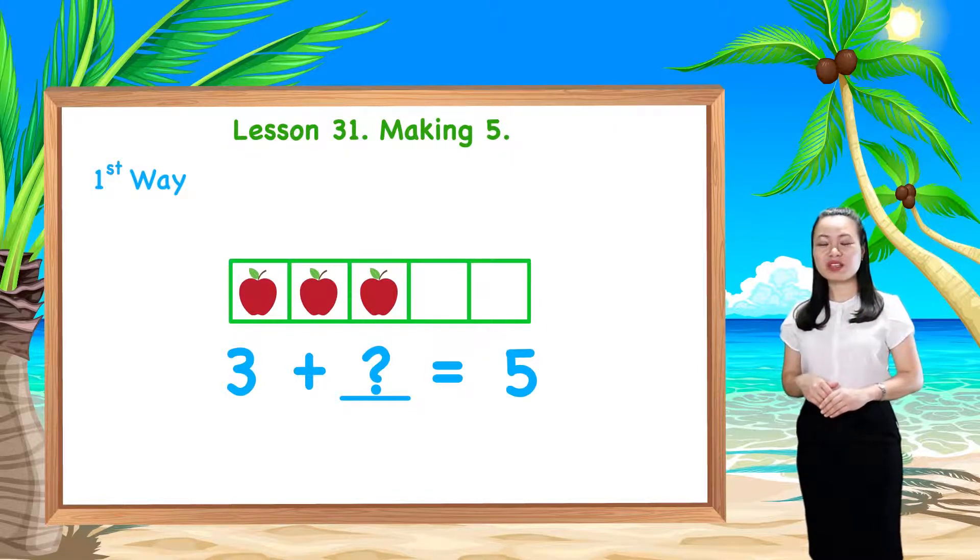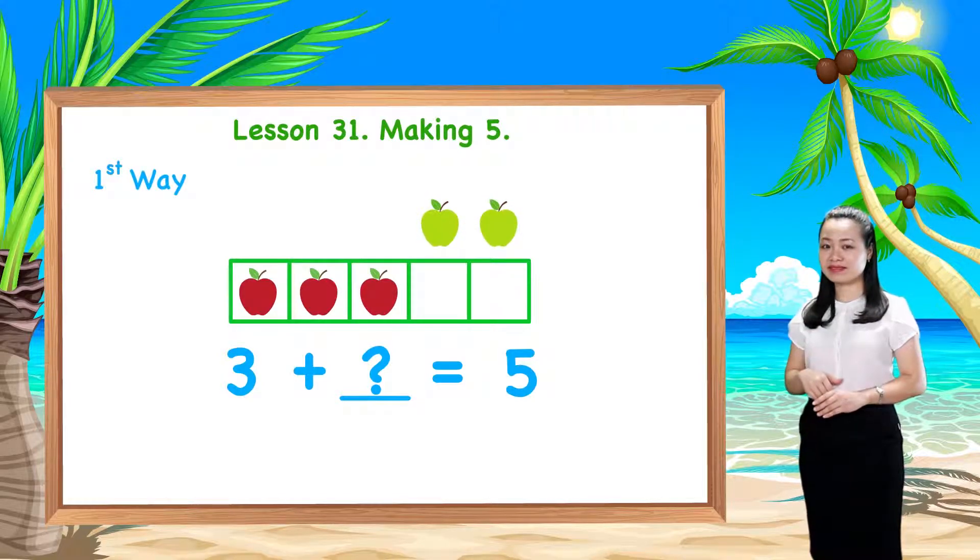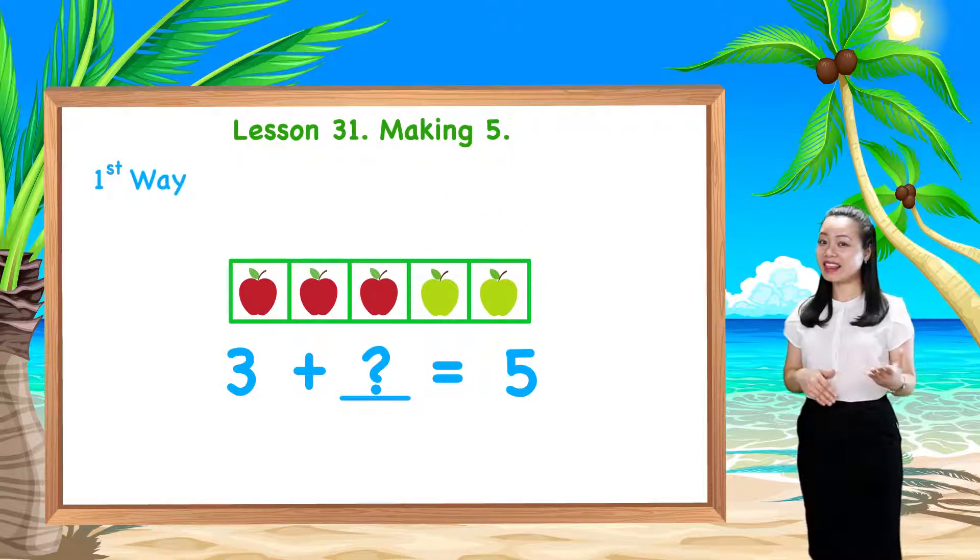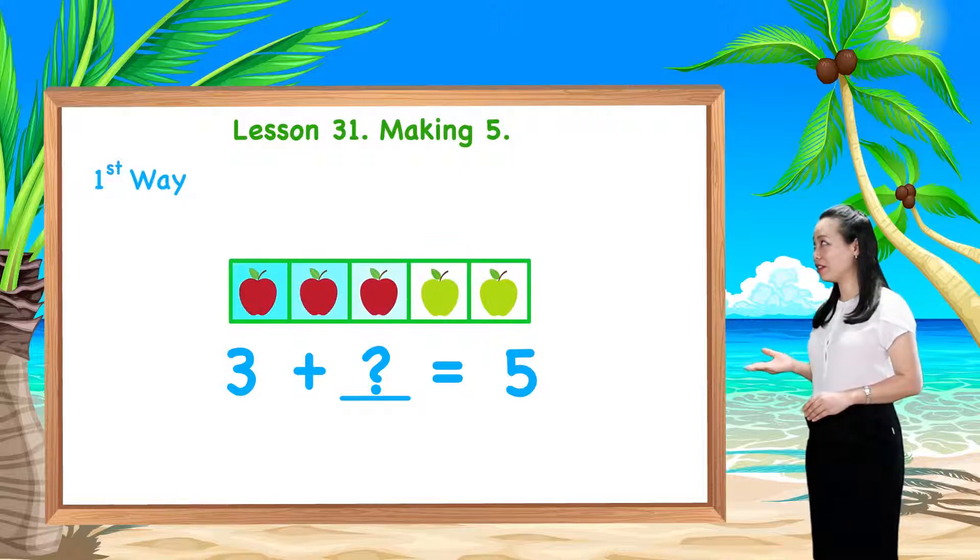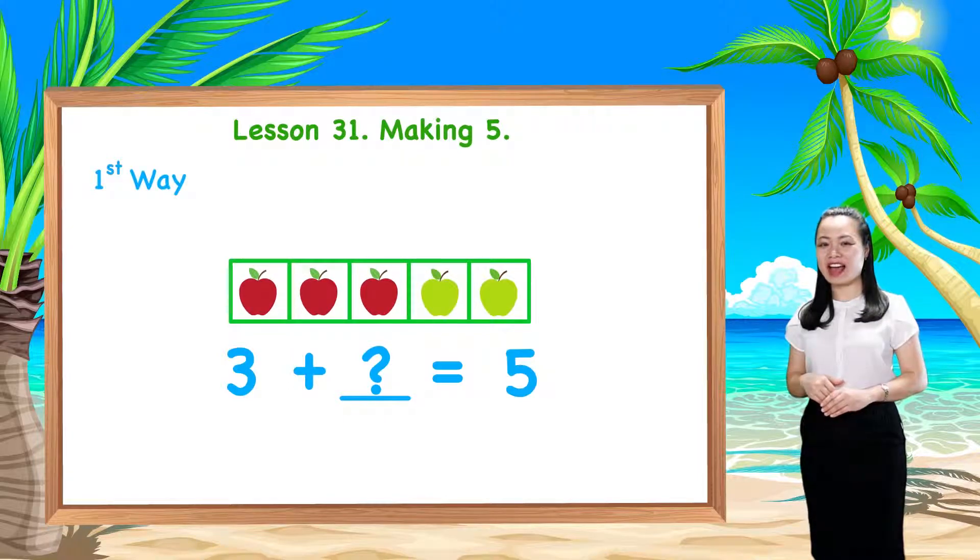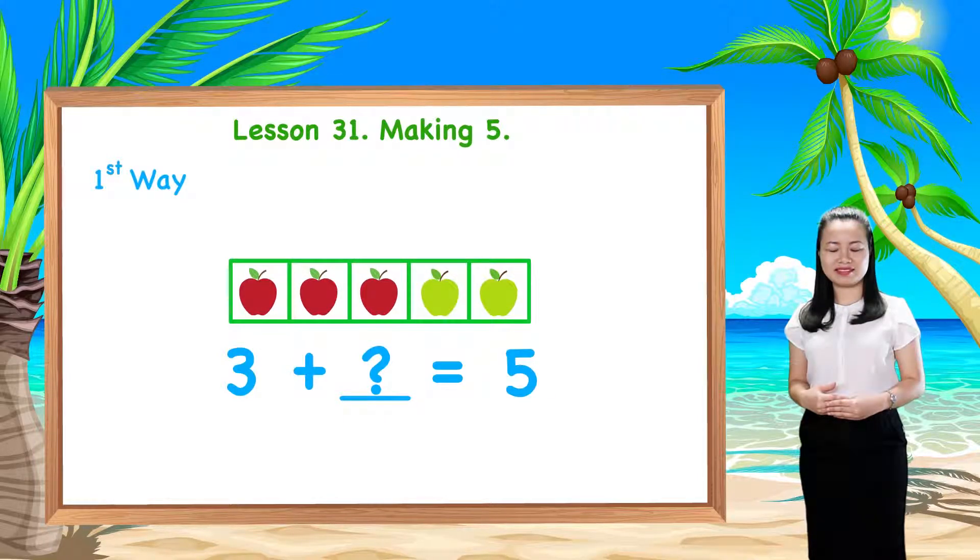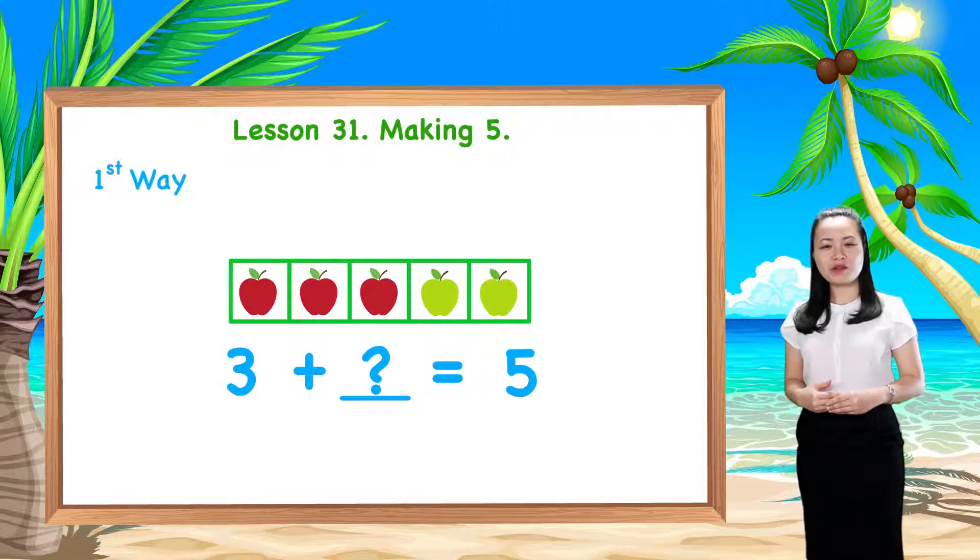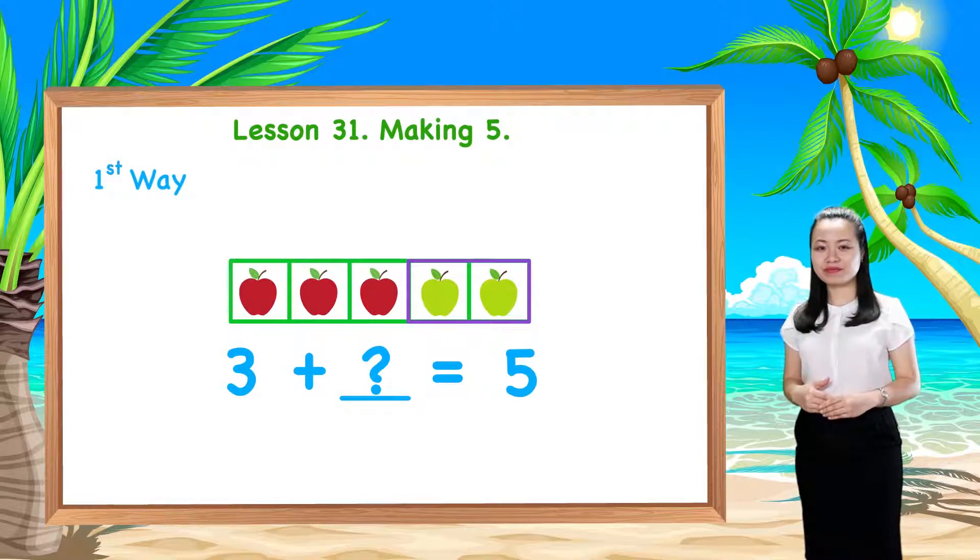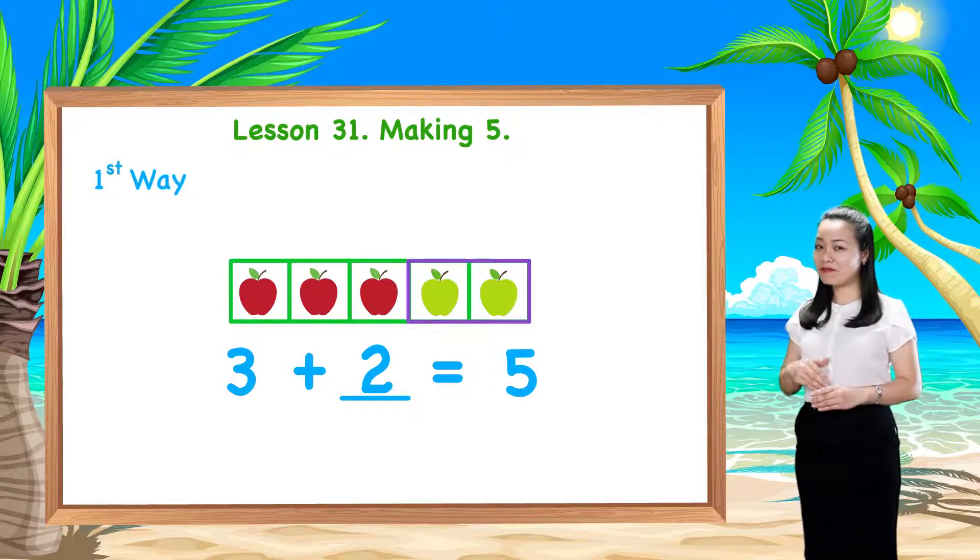If we have two more apples to put in these empty boxes, then all the boxes are filled up. And we have five apples now. So, we need two more apples to have a total of five. Therefore, we have three plus two equals five.